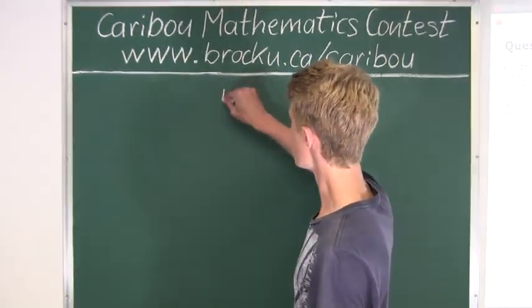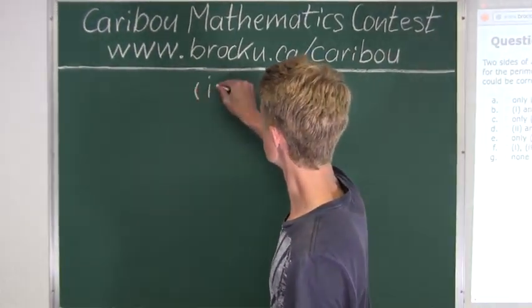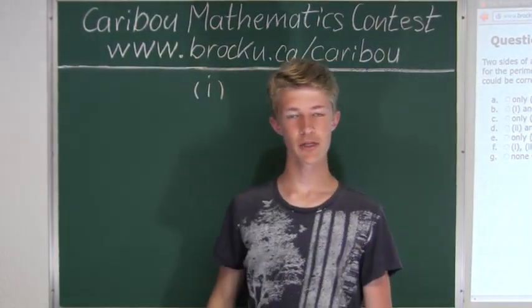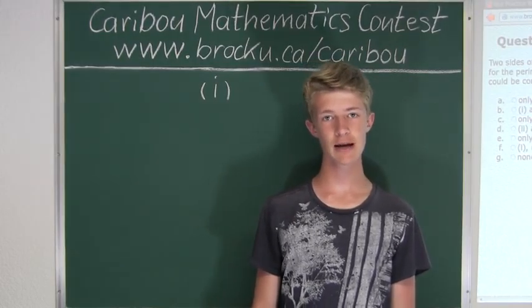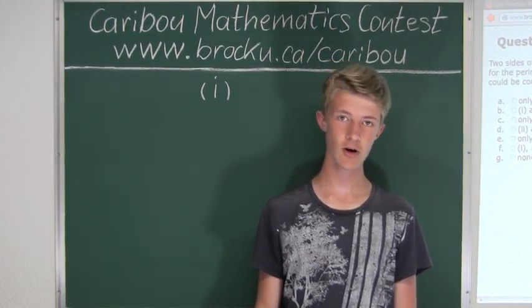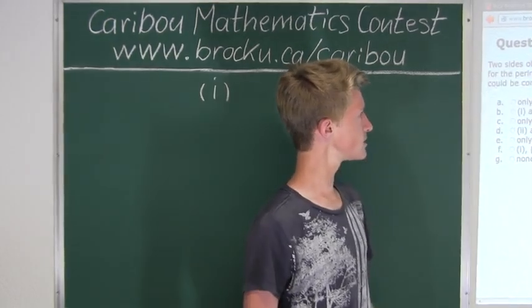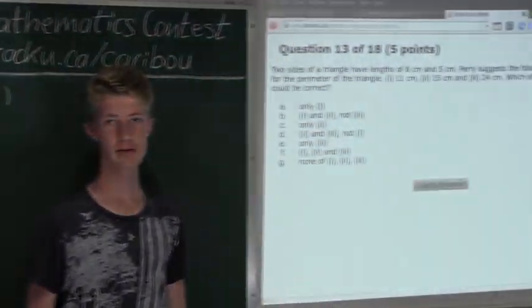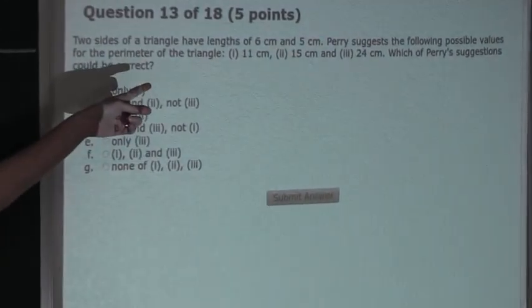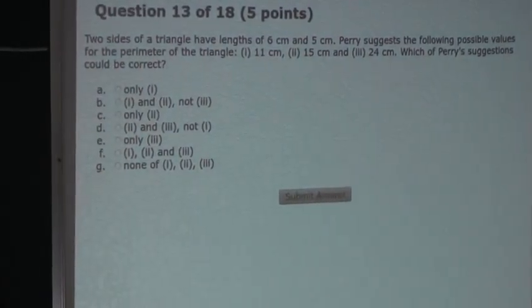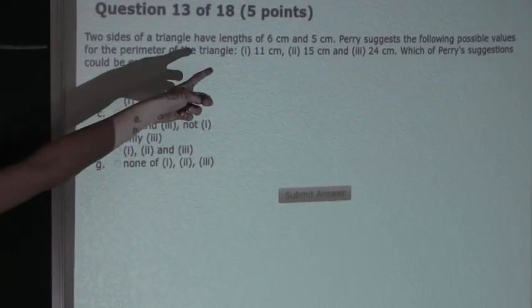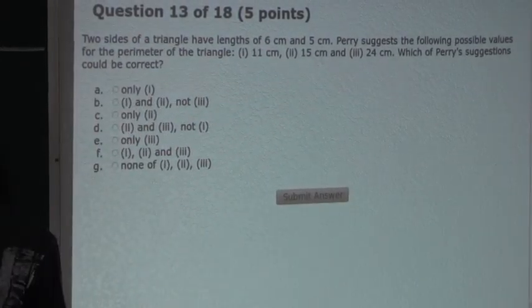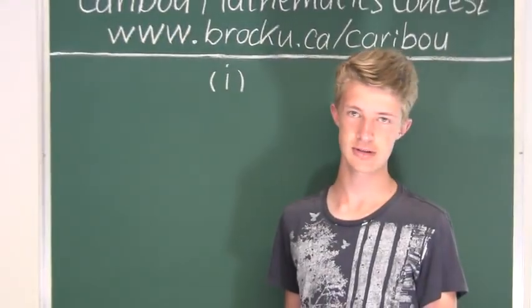So let's look at Case I, the first case. To find the third side length of a triangle, we will take the perimeter and subtract the two side lengths which we know. We know the two side lengths are 6 cm and 5 cm, and the perimeter for Case I is 11 cm. So 11 minus 6 is 5, and 5 minus 5 is 0. So the third side length for Case I would be 0 cm.